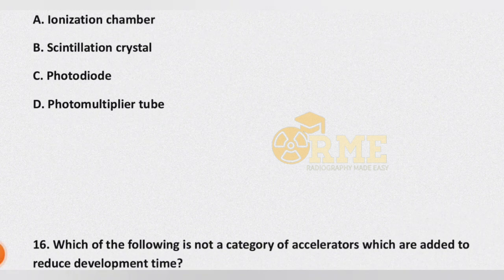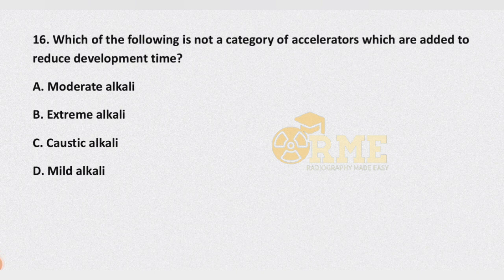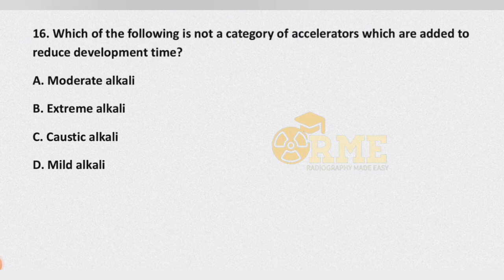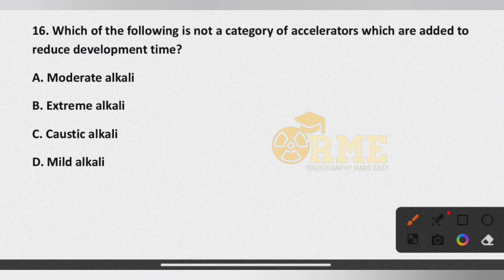Question number 16: which of the following is not a category of accelerators added to reduce development time? Options are moderate alkaline, extreme alkaline, caustic alkaline, and mild alkaline. The correct answer is option B, extreme alkaline, as it is not a recognized category. The other three categories are valid alkaline accelerator categories.